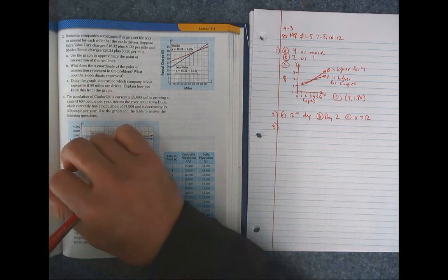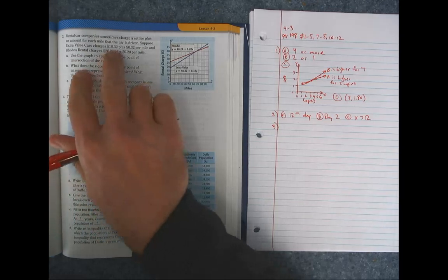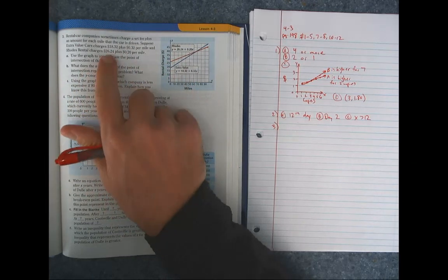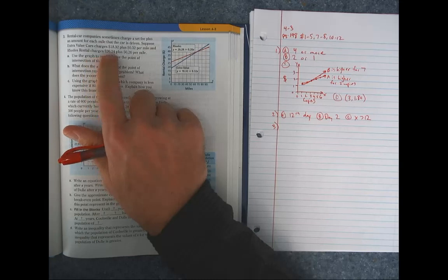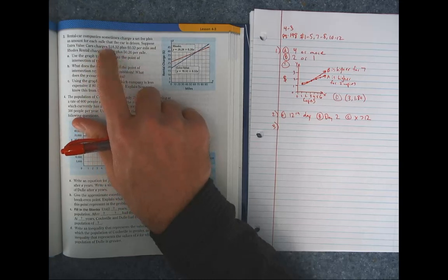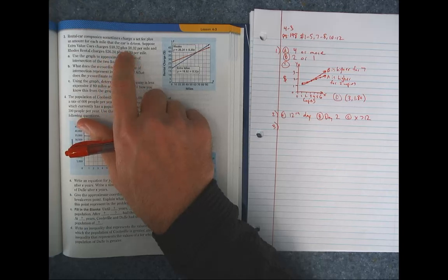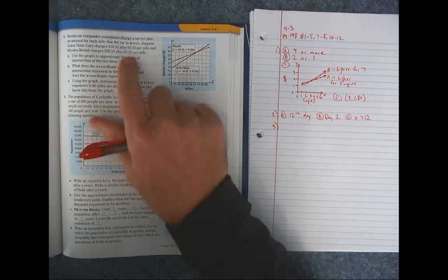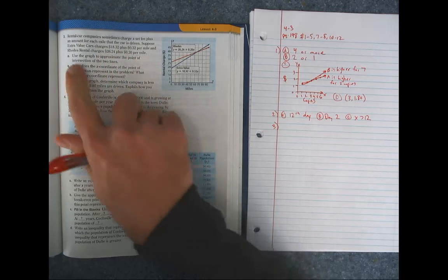All right. We have rental car companies here. And they're going to tell you exactly what's going on. They've actually given you the equations as well. So one of them charges $18.32 plus $0.32 a mile. One charges $0.26, $0.24, but $0.20 a mile. So a bigger initial charge here for roads rentals, but they charge less per mile. Extra values, less up front, but more per mile. So eventually, because they're charging more per mile, it will get more expensive if you go far enough. But if it's a short distance, then the more up front would be more expensive.